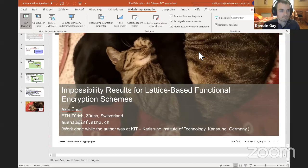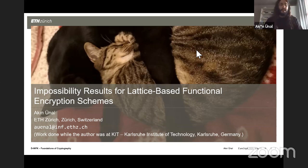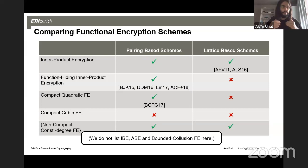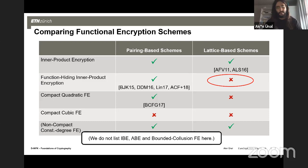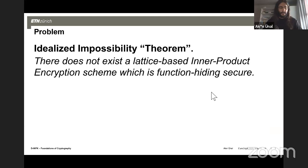To start in medias res: when we compare functional encryption schemes from pairings and from lattices, we can see there are many very interesting functional encryption schemes from pairing-based assumptions that cannot be achieved from lattice-based assumptions. The main question for us was: why are there functional encryption schemes from standard assumptions that cannot be reproduced from lattice-based assumptions? We focus our paper on function-hiding inner-product encryption.